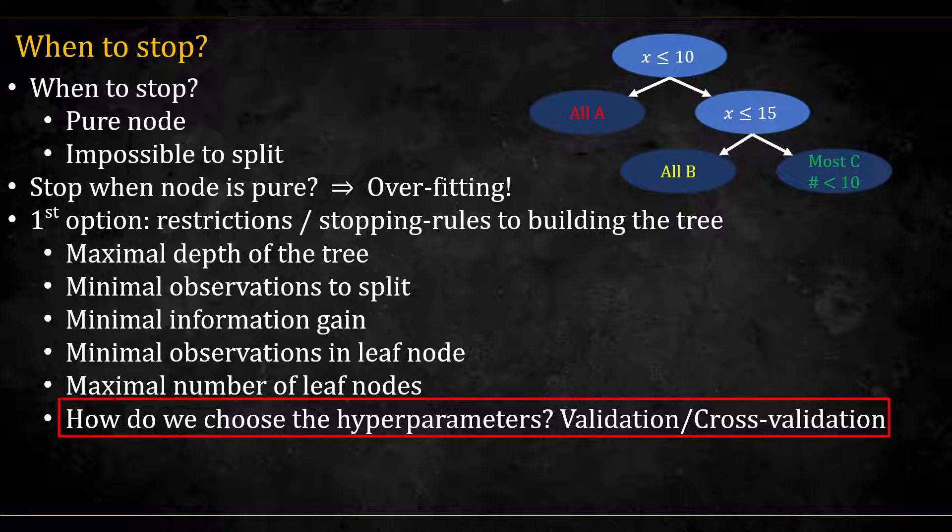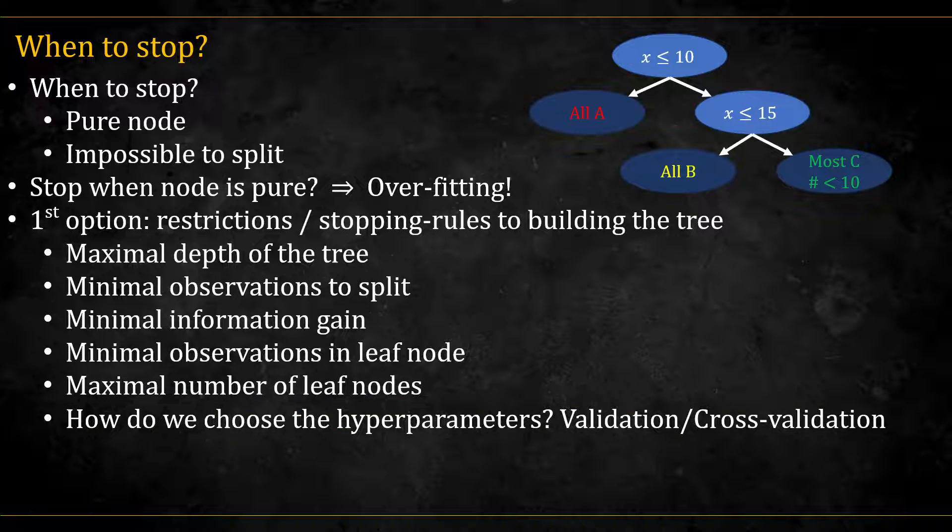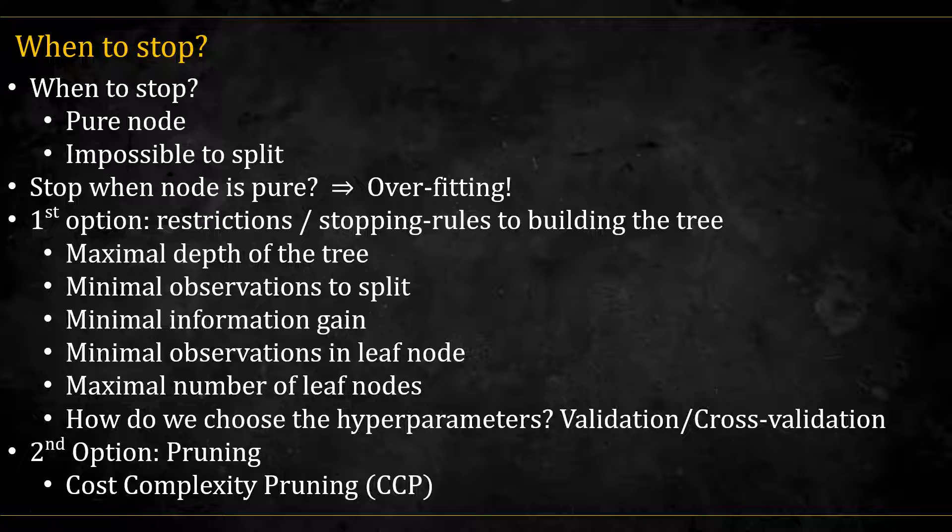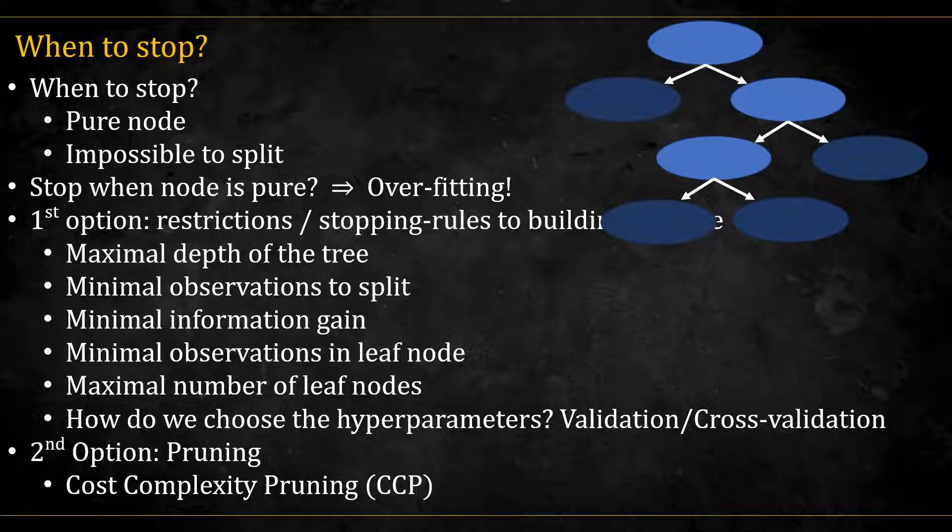How do we choose these parameters? Most often using validation. That is, we look for the parameter that gives the best test set results. A second option is pruning. In pruning, we first grow a tree to its fullest, and then go back and remove some branches from the tree. One popular pruning method is called cost complexity pruning, and I will discuss this in a future video.